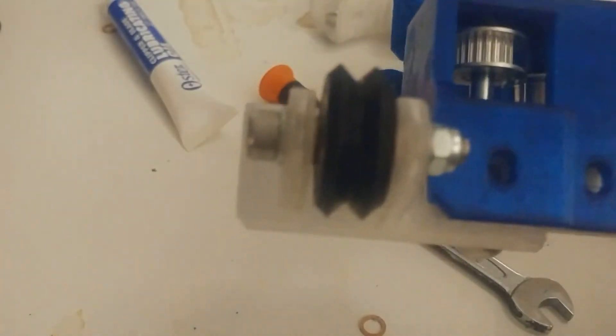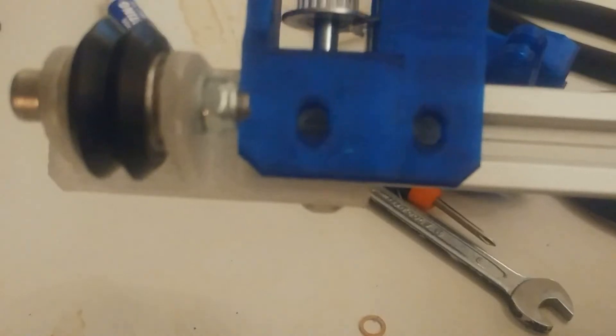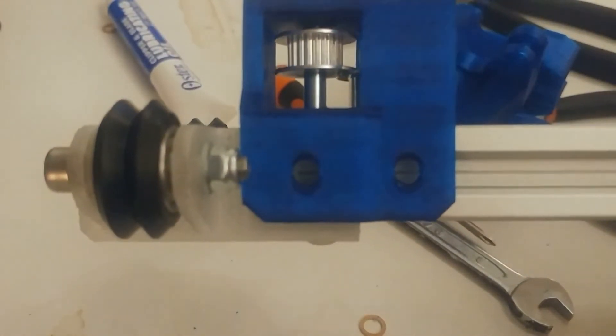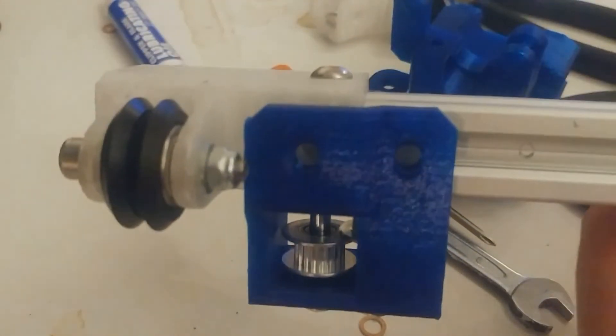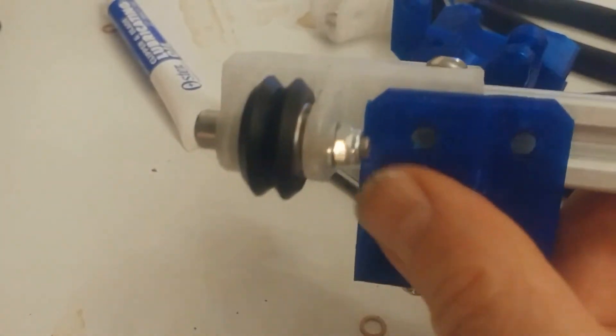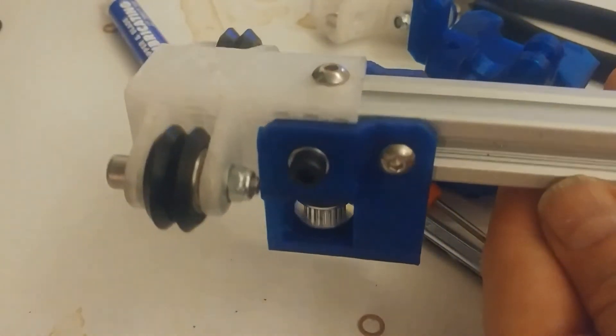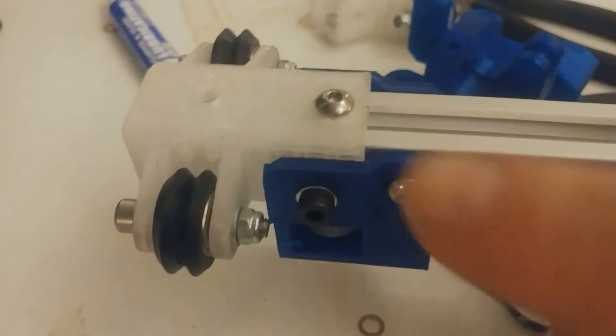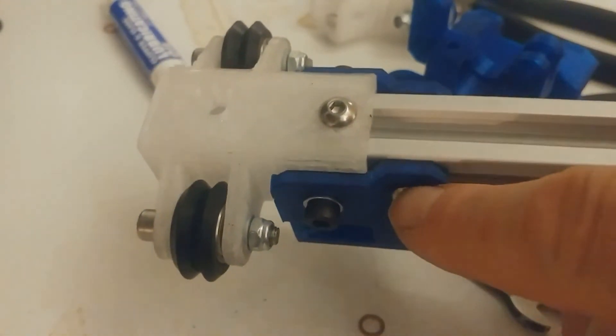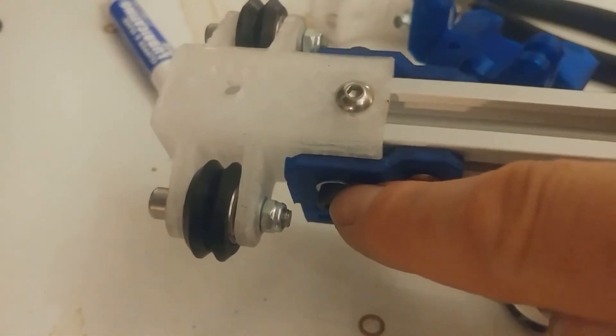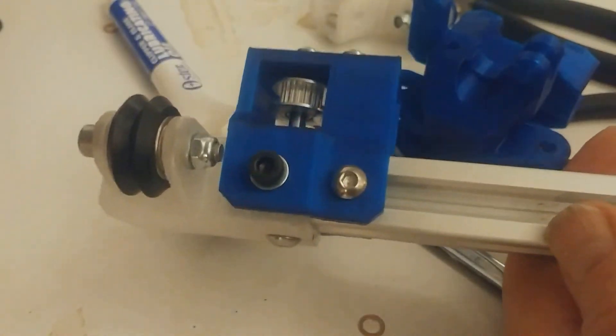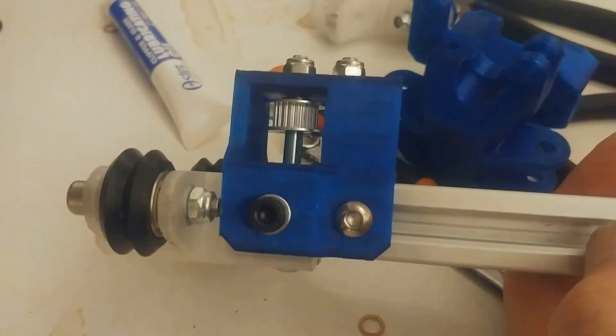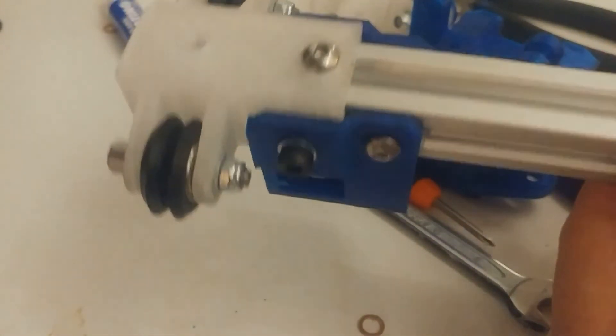This should do it. The holes should be coincident, and they are. Now we need some more nuts inside. This is what it should look like when attached - this is M5 by 10, and this is M5 by 12. Looks good, done!